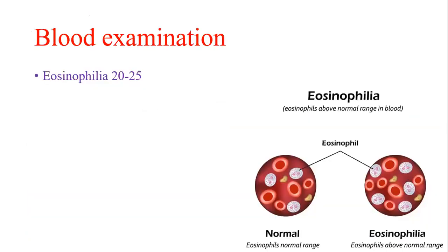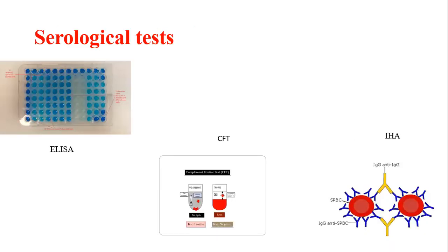This is an important test for short notes. Blood examination shows eosinophilia of 20 to 25 percent. Serological tests include ELISA (enzyme-linked immunosorbent assay), complement fixation test, and IHA (indirect hemagglutination).